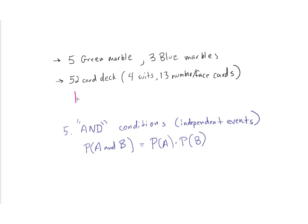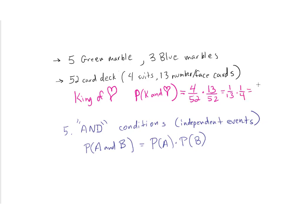Looking at the deck of cards: what's the chance of getting the king of hearts? This is the probability of getting a king AND a heart. The probability of a king is 4 out of 52, and the probability of a heart is 13 out of 52. These reduce to 1 thirteenth times 1 fourth, or 1 fifty-second. That makes sense — there's only one king of hearts in the deck, so my successful count is 1 out of 52.